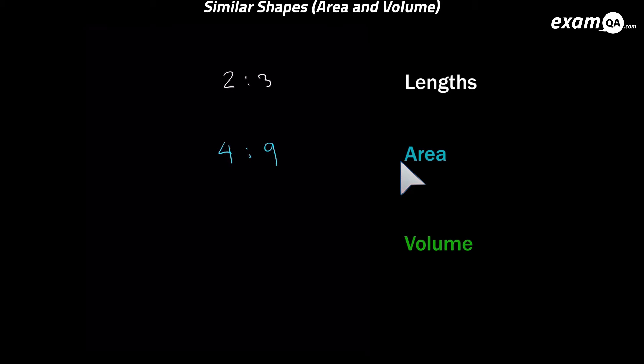Now to get the volume scale factor you look at the length scale factor and you cube it. So 2 cubed gives us 8 and 3 cubed gives us 27. And this is the volume scale factor. And remember we've got the volume scale factor from the length not from the area. You cannot go from area to volume nor can you go from volume to area. We have to always go back to the lengths. And from lengths we can get to area by squaring and from lengths we can get to volume by cubing.